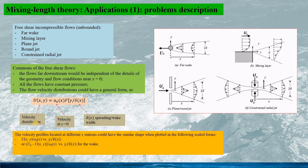For all these flows, the velocity profiles located at different x-stations could have the similar shape when plotted in the scaled form, as the ratio of the velocity distribution u(y) divided by u_0 at y equals to 0, versus the ratio of the y over the spreading width, or given by the defect velocity distribution divided by u_0(x) versus the ratio of y over the wake width. The flow with such properties are called self-preserving or self-similarity.